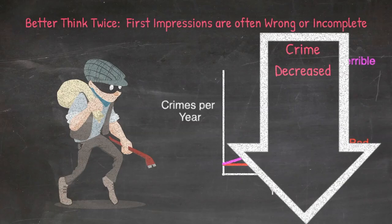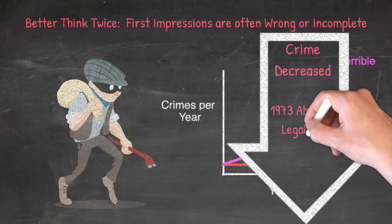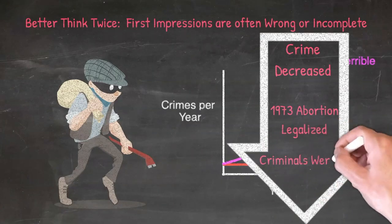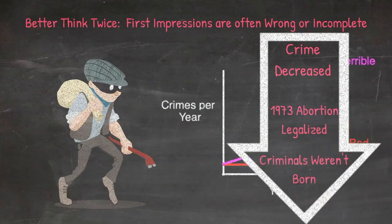But again, they were all wrong. The real reason crime dropped so significantly was due to abortion being legalized approximately 20 years earlier in 1973. As the authors described, children born into adverse family conditions are much more likely to become criminals, and the women most likely to pursue an abortion were in those adverse conditions.